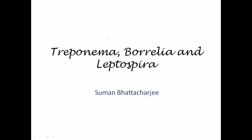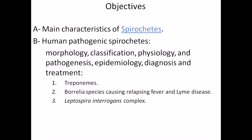We are going to talk about their physical properties as well as some biochemical features inside their cells, and the pathogenesis — the diseases they cause for humans. First, we will cover the main characteristics of spirochetes and their general cell features. Second, we will discuss human pathogenic spirochetes: their morphology, classification, and physiology, going up through epidemiology.